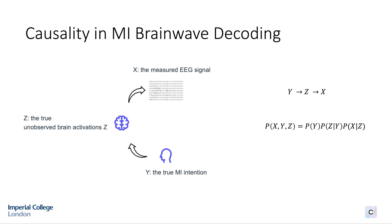As a consequence of the above anti-causal definition and causal diagram, we can explore the problem of MI-EEG classification through the following factorization: P of Y, X, Z equals P of Y times P of Z given Y times P of X given Z.